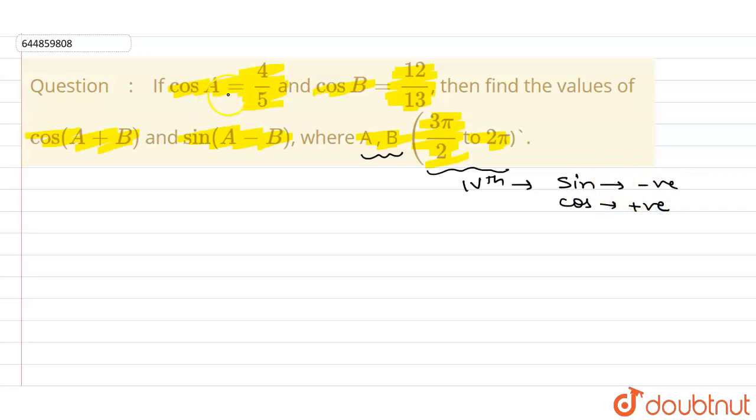And here it is given cos A equals 4/5. So cos A equals 4/5 and we know that cos A can be written as B/H, B for base, H for hypotenuse, means base upon hypotenuse.